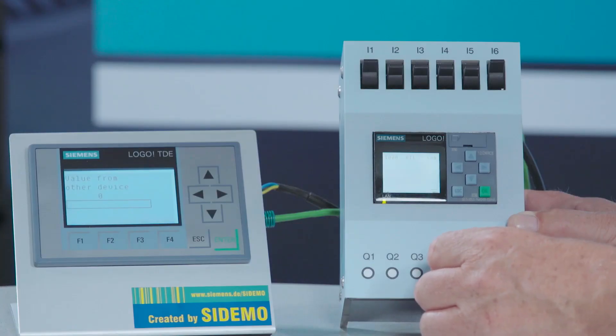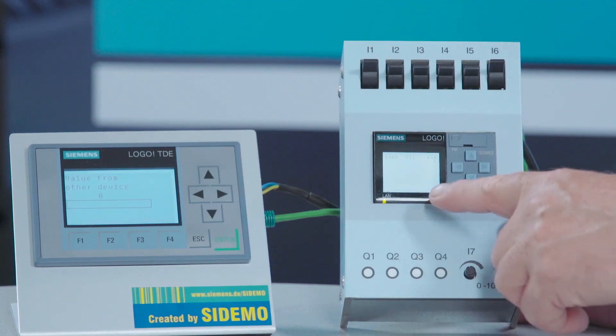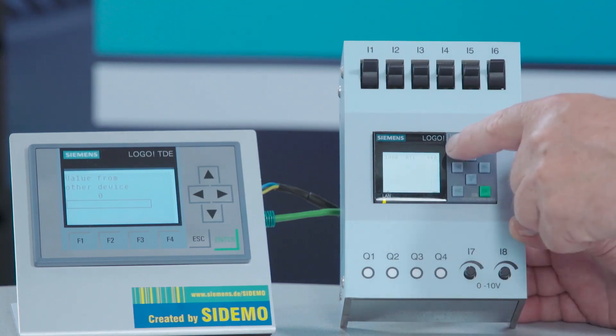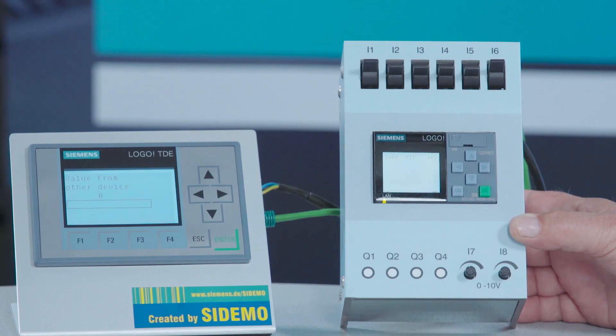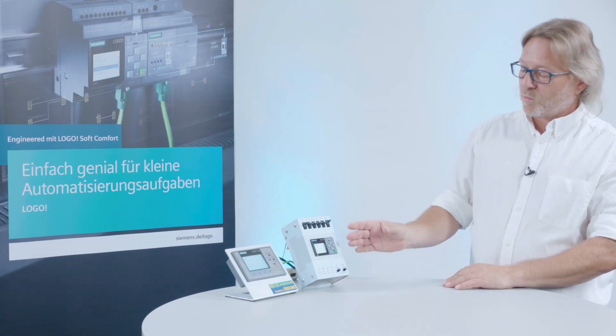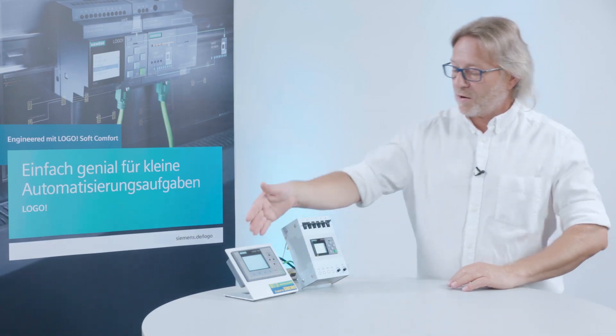If I modify it, we can see that in the graph. The value is shown as a trend view and up here on the right as a value in figures. That works on the basic unit as well as on the TDE.